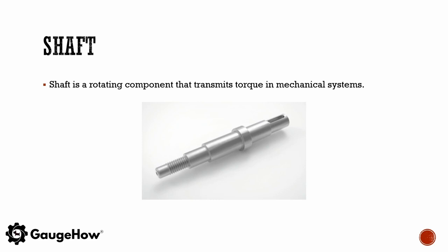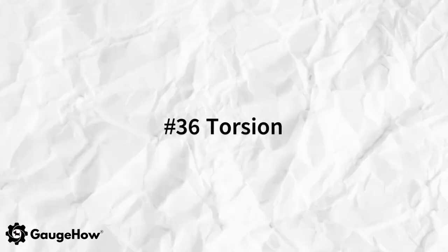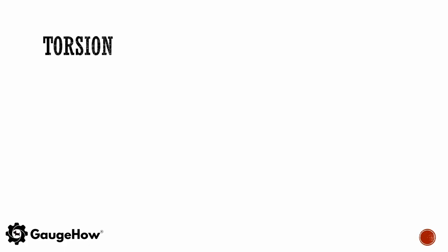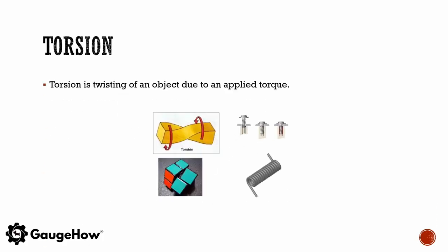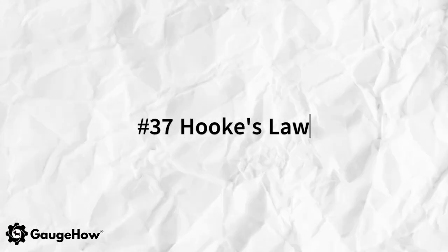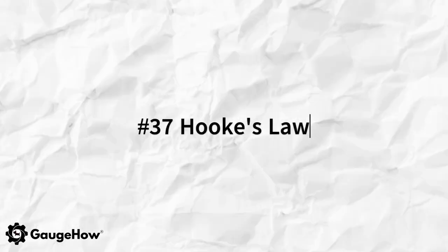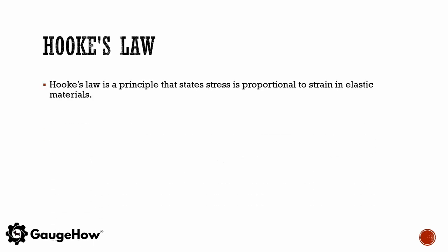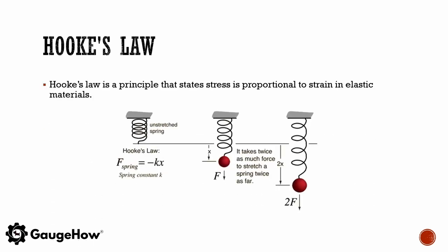A shaft is a rotating component that transmits torque in mechanical systems. Torsion is a twisting of an object due to an applied torque. Hooke's law is a principle that states stress is proportional to strain in elastic materials.